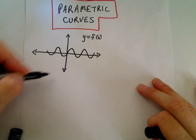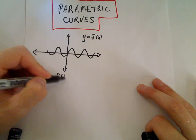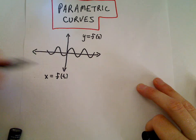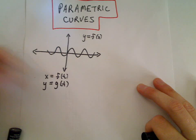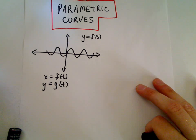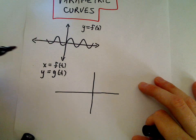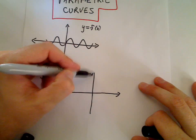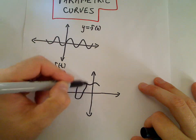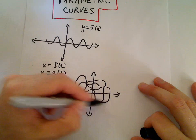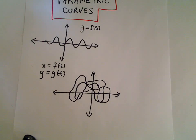The idea here is that we're going to make our x coordinate a function of a new variable — usually denoted as t — and then the y coordinate will also be a function of t. One usefulness of parametric curves is to graph objects that move around in two dimensions. So this is one thing that parametric curves are going to be useful for.